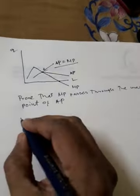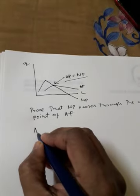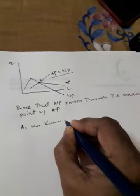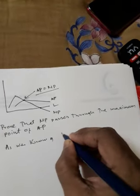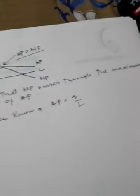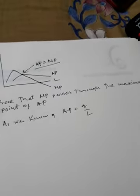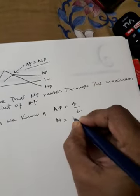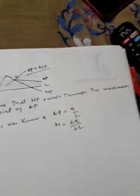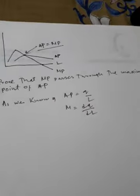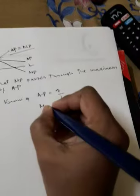We will solve this problem. As we know, AP is equal to Q by L. We have already solved the total production per total number of labor, so we have to solve the unit of labor. AP is equal to Q/L and MP is equal to dQ/dL. The total output of labor is equal to MP.